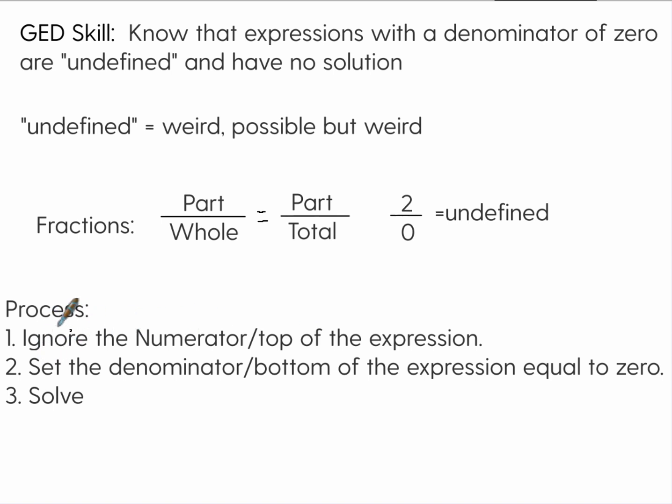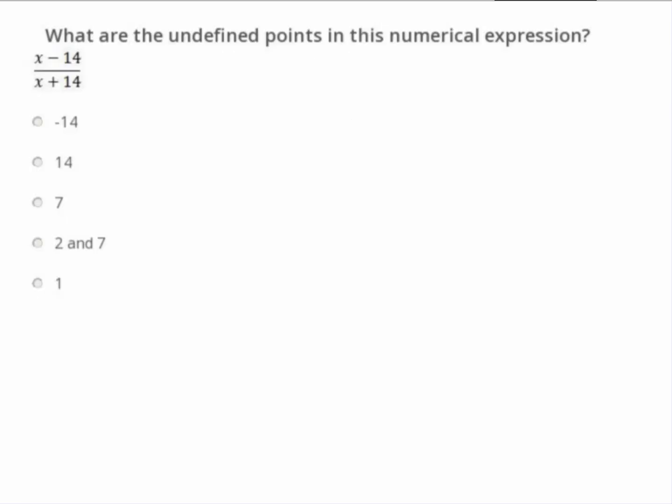So here's the process that we're going to go through when we're answering these. Ignore the numerator or the top of the expression. So in this case we would ignore the two. Set the denominator to the bottom of the expression equal to zero. We've got that. Then we would solve it. So it's really a three-step process. Let's go through three different examples.